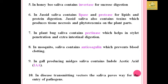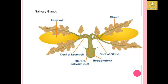In jassid saliva, it contains lipases and proteases used for lipid and protein digestion. Jassid saliva also contains toxins which produce tissue necrosis and phytotoxins in plant parts. In plant bug saliva, it contains pectinase which helps in stylet penetration and extra-intestinal digestion. In mosquitoes, the saliva contains an anti-coagulant substance which prevents blood clotting when absorbing blood from humans or animals. In gall midges, the saliva contains indole-acetic acid (IAA). In disease-transmitting vectors, saliva provides the route of entry for pathogens, which then transmit diseases to other living organisms. I have provided the structure of the salivary glands, showing the reservoir, gland, duct of reservoir, duct of gland, and the efferent salivary duct, which is attached to the hypopharynx.